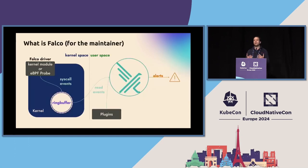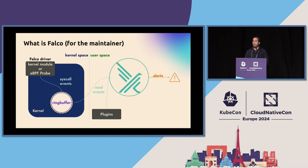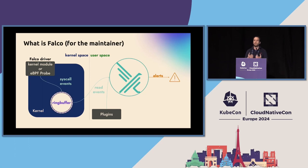But what if you're a maintainer or a contributor — which I hope some people will want to be — you see Falco a little bit differently. There's this thing called a kernel module or an eBPF probe. This is the part that the user doesn't really want to care about, but it's there in order to take those events from the kernel and send them to the user space agent, which is able to compute the rules and enrich them with a lot of user space data, Kubernetes, and many other things.